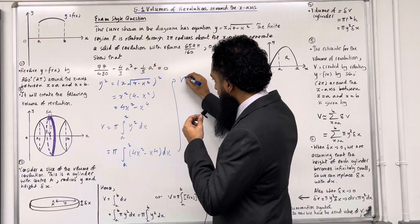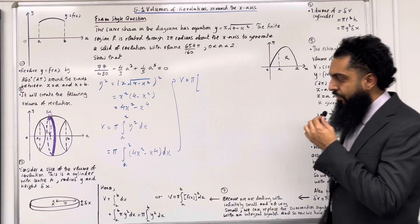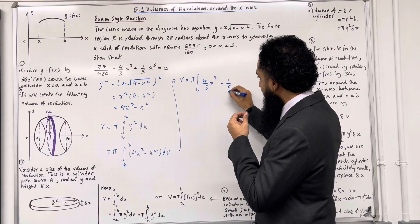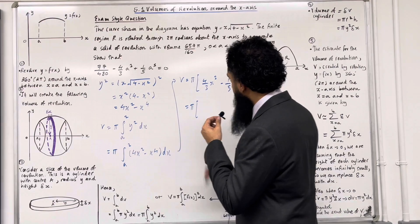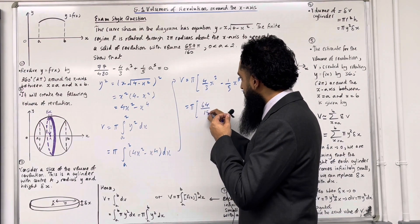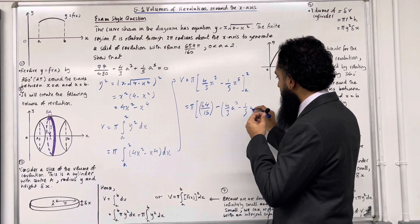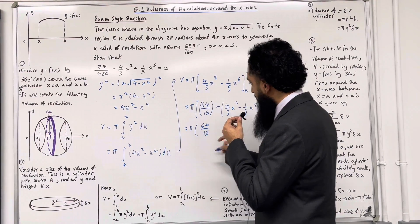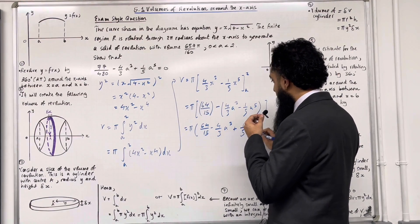The volume equals pi times open square bracket, integrating term by term. The first term integrates to 4 over 3 x to the power 3. Minus the second term integrates to 1 over 5 x to the power 5, close square bracket, from a to 2. Substituting the upper limit x equals 2 gives 64 over 15. Take away, substituting x equals a: 4 over 3 a to the power 3 minus 1 over 5 a to the power 5, close square bracket. This gives 64 over 15, minus 4 over 3 a to the power 3, plus 1 over 5 a to the power 5.